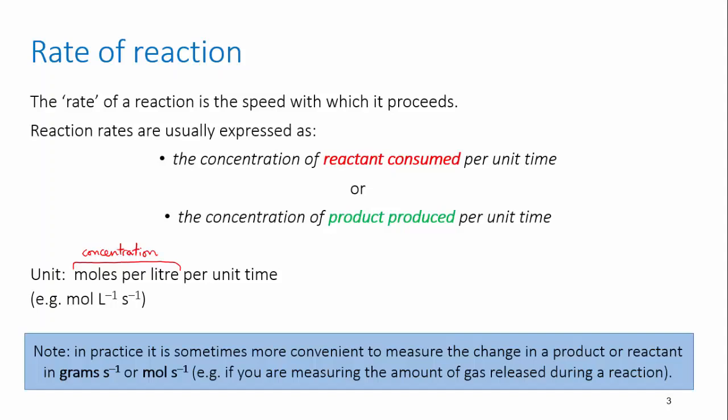This assumes, however, that you're able to measure concentrations in your reaction. If that's difficult, you might instead measure the mass of a reactant or product, like if it's a gas. In this case, you can also express rates as grams per second or moles per second.